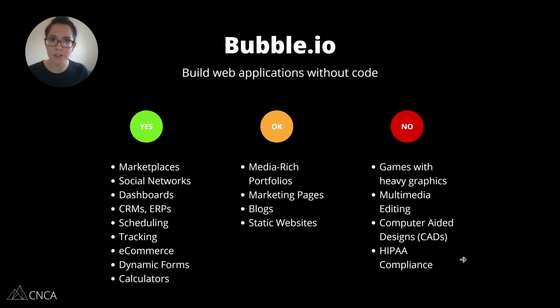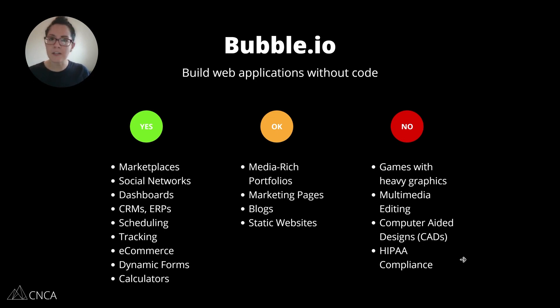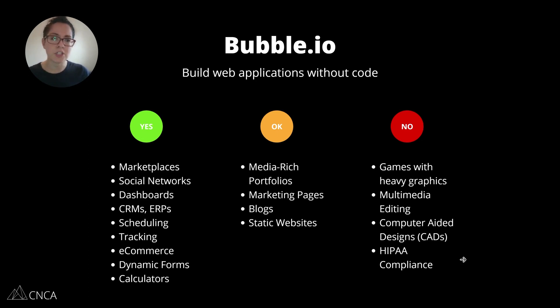Social networks are also very popular — chat functionality between users, being able to have activity feeds, notifications, comment threads, sharing pictures with each other. Normal social network type of stuff.